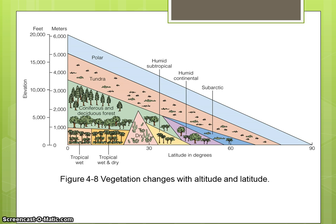Mean annual precipitation declines with decreasing mean annual temperature, and mean annual temperature decreases from the equator to the poles, while seasonal variation in temperature increases.